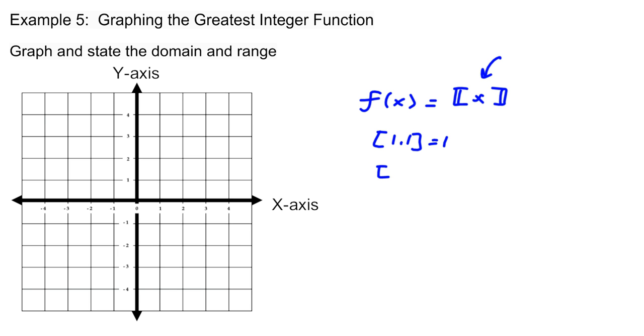The greatest integer of 1.5 would be 1 again. The greatest integer of 1.99 would also be 1, and even 1.999999, it's always going to be 1 right here.